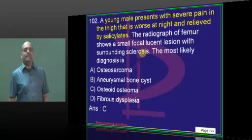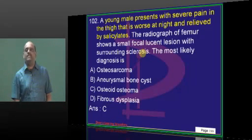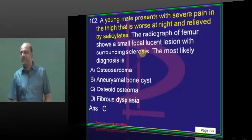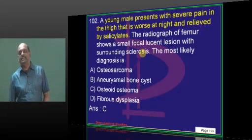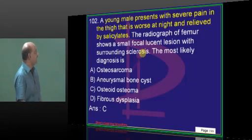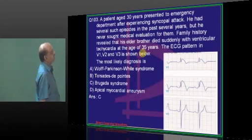Severe pain in the thigh. Thigh is a diaphyseal bone. In the diaphysis, osteoid osteoma occurs, and the pain is relieved by drinking salicylates — so osteoid osteoma.